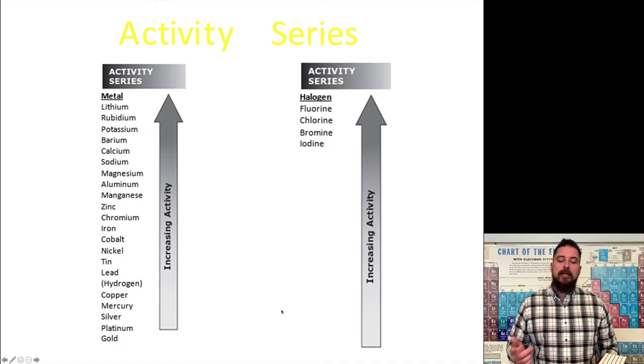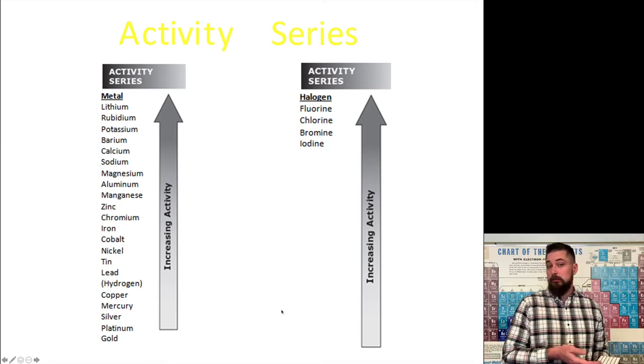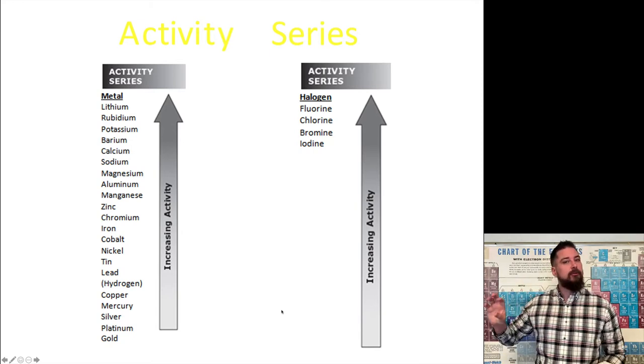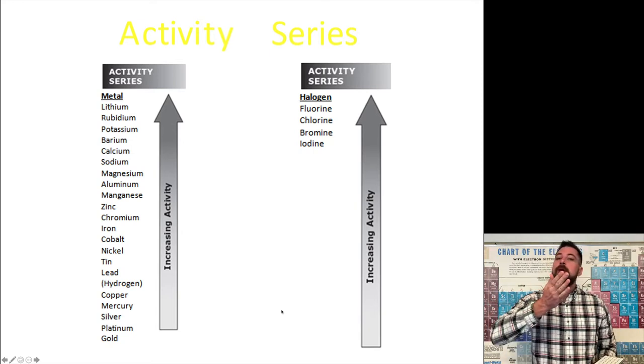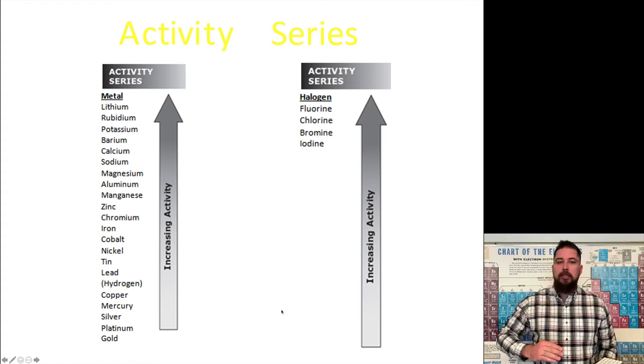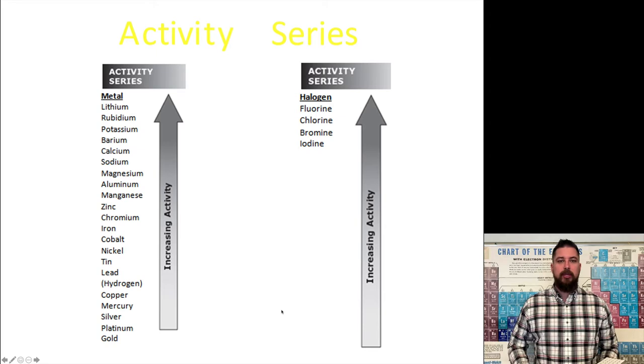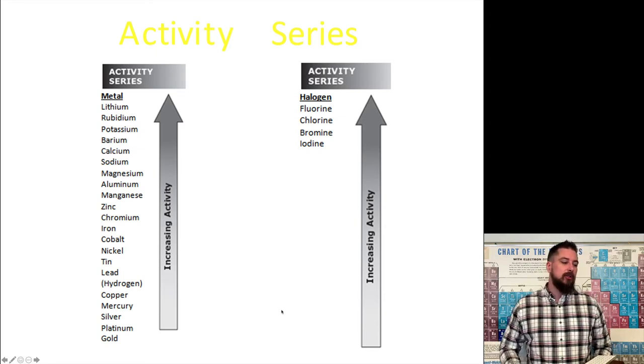Now let's say that we have it reversed, where the magnesium is alone, it's the element, and the lithium is the one in the compound. Because magnesium is lower on the list, it will not replace the lithium in a single replacement reaction. So that reaction actually would not occur.